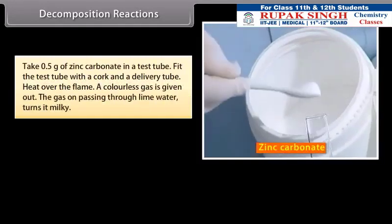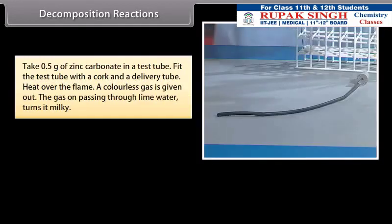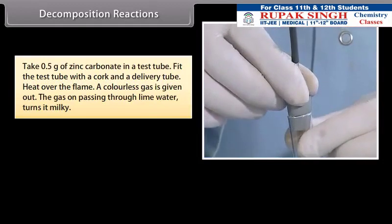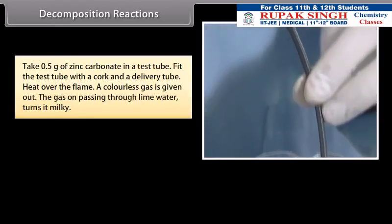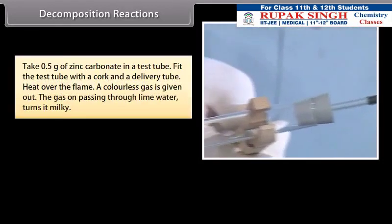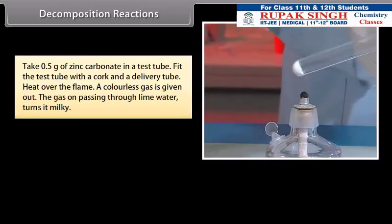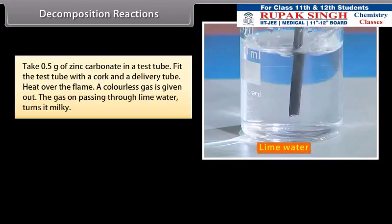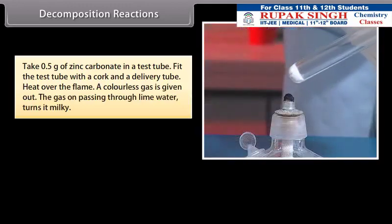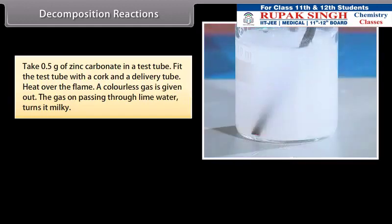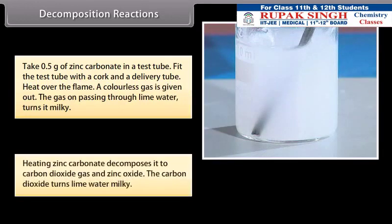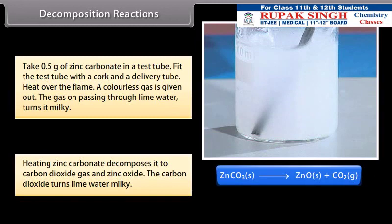Activity: Take 0.5 gram of zinc carbonate in a test tube. Fit the test tube with a cork and a delivery tube. Heat over the flame. You will see a colorless gas is given out. The gas on passing through lime water turns it milky. Heating zinc carbonate decomposes it to carbon dioxide gas and zinc oxide. The carbon dioxide turns lime water milky.